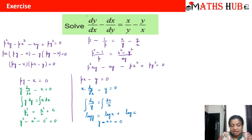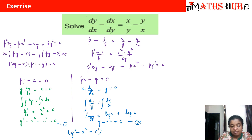Combining the two solutions by multiplying the expressions together: (y² − x² − c')(y − cx) = 0. This becomes our final answer.